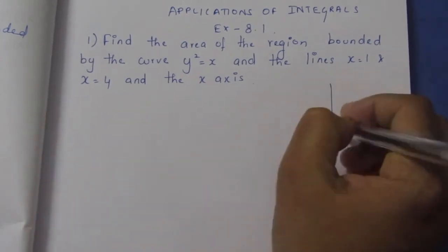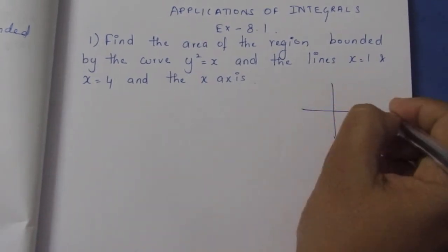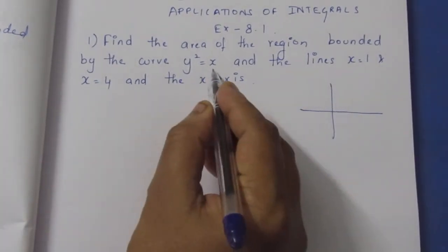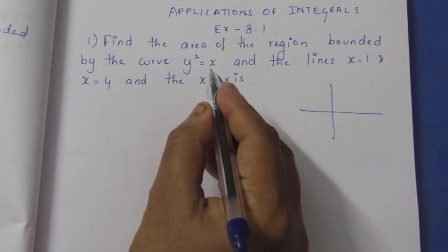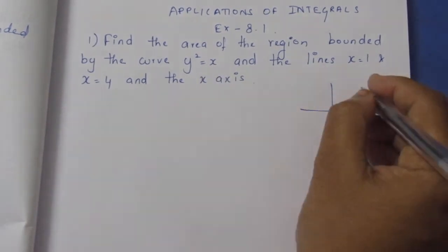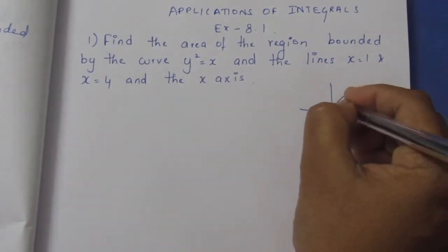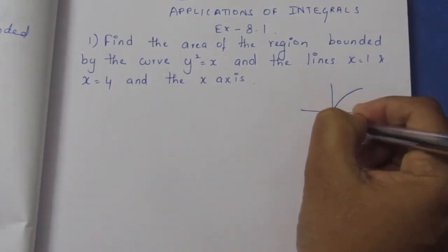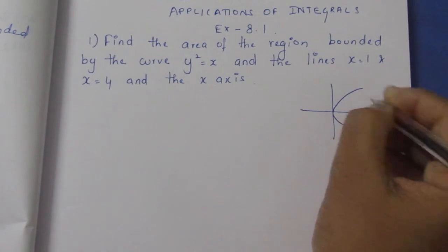We will check out this parabola y² equal to x. We will check out this curve and here we will see it passes through the origin.